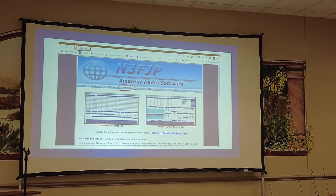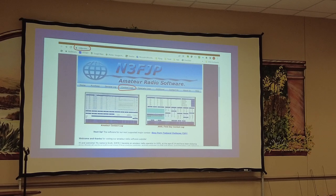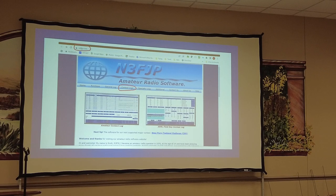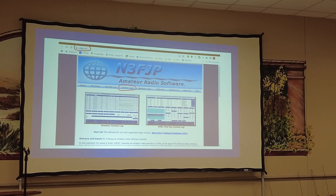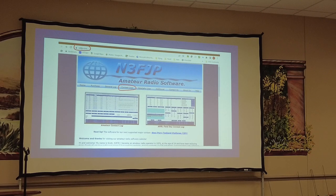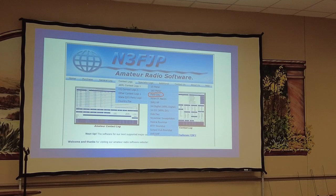This is N3FJP. You can get to it from N3FJP.com — this is the home page. If you're doing a station at Field Day, you should know that somebody there is going to have a computer with this on it. Not everybody has to have it. We're going to have a lot of people there, and I think we're only going to have about four or five stations, but each station should have a computer with this on it. So download it before you get there. Go to Contest Logs, then Field Day. One thing I noticed — they did an update. I checked to make sure I had the latest version.